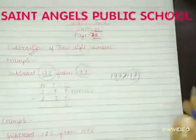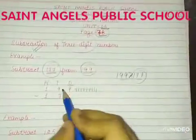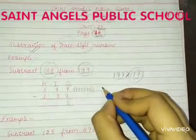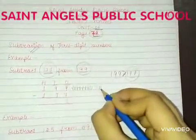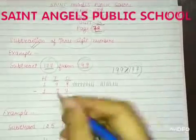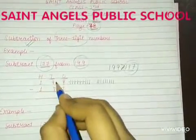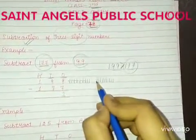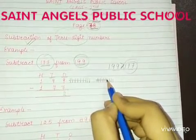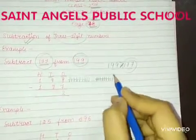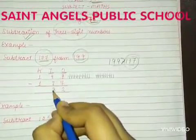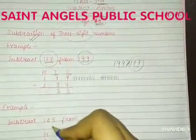Now, subtract the tens place digit, that is 9 minus 7. Draw 9 lines in front of 9. We have to subtract 7, so cut 7 lines out of the 9 lines drawn. Count all the remaining lines — there are 2. Write 2 here. So, 9 minus 7 is equal to 2.